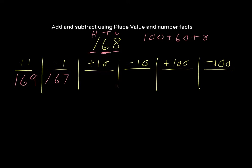We're now looking at the 6, the 60. So we have 60, and we have to add 10. If we have 60 already, that means we have 6 sets of 10. If we add another set of 10, that means our new number is going to be 178. Remember that the 8 doesn't change because we're not dealing with the units anymore, and the 1 doesn't change because we're not looking at the 100s. The only digit that's changing is the one in the 10s column.